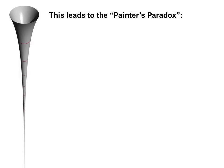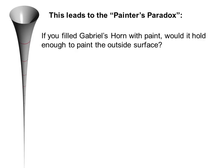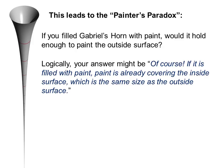This leads to the painter's paradox. If you filled Gabriel's horn with paint, would it hold enough to paint the outside surface? Logically, your answer might be, of course! If it is filled with paint, paint is already covering the inside surface, which is the same size as the outside surface.